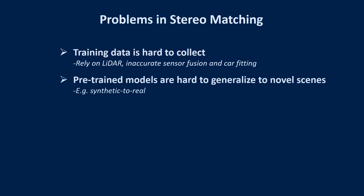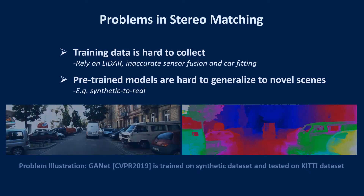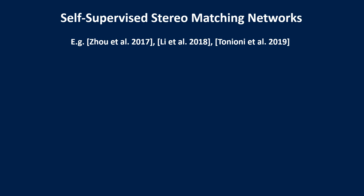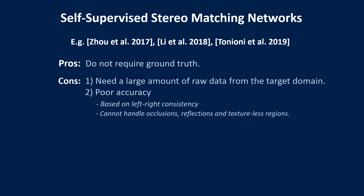Moreover, pre-trained models on one specific dataset are hard to generalize to other novel domains. As illustrated in this figure, the state-of-the-art GANet trained with synthetic data produces poor results when tested on the real KITTI dataset. Self-supervised methods can solve the training data problem since they require no ground truth, but they still require access to a large amount of stereo pairs from the target scene, which are not always available in real-world applications. Additionally, these self-supervised models have poor accuracy.